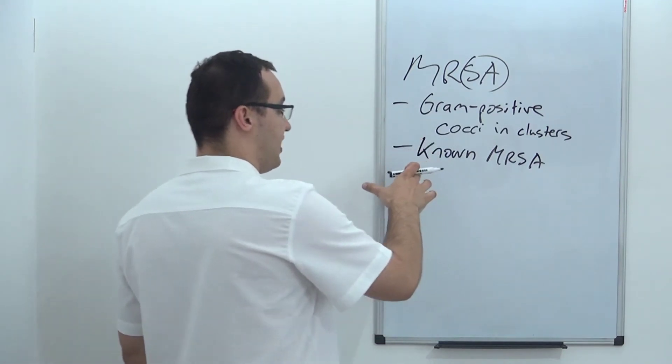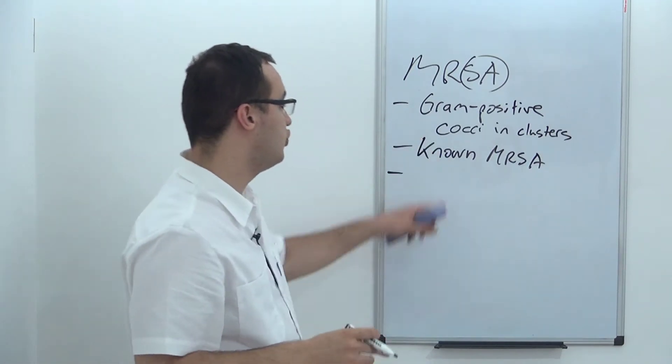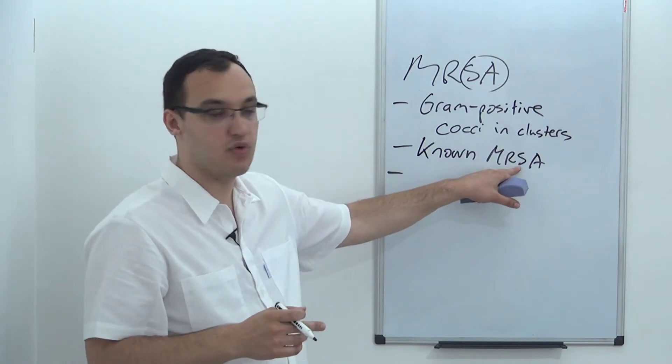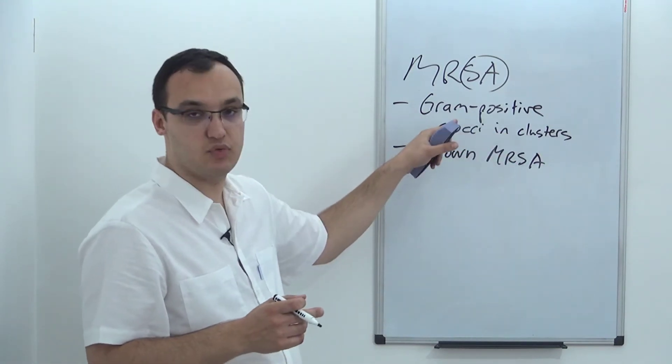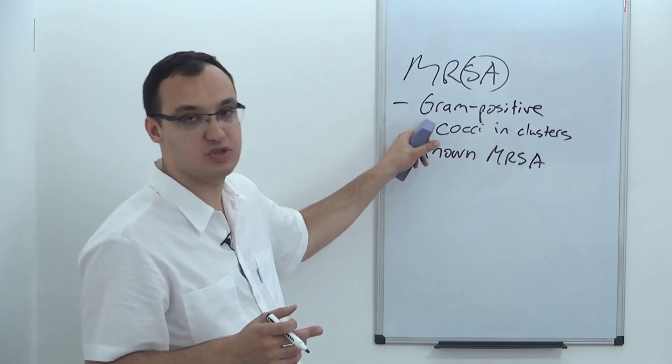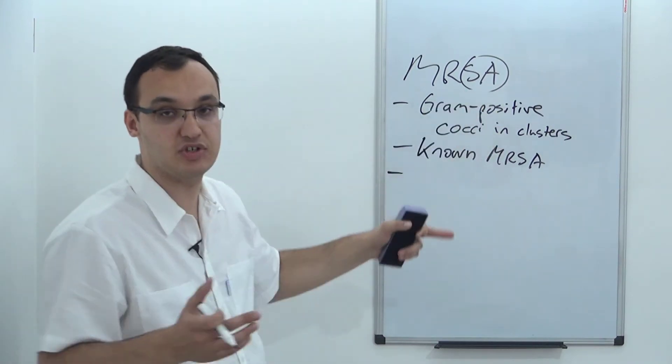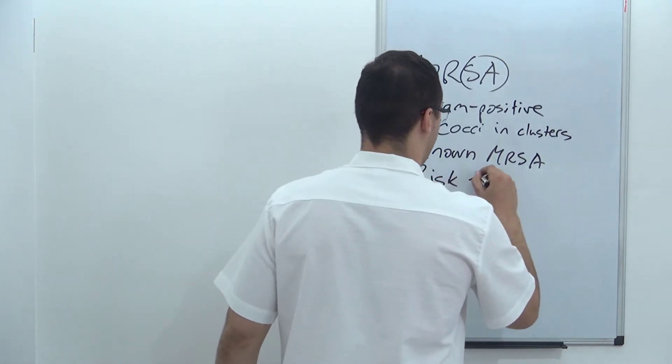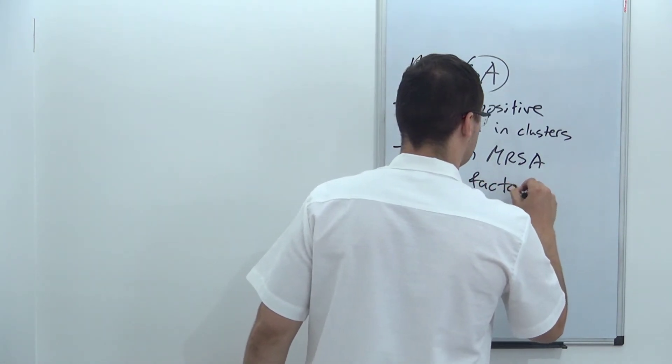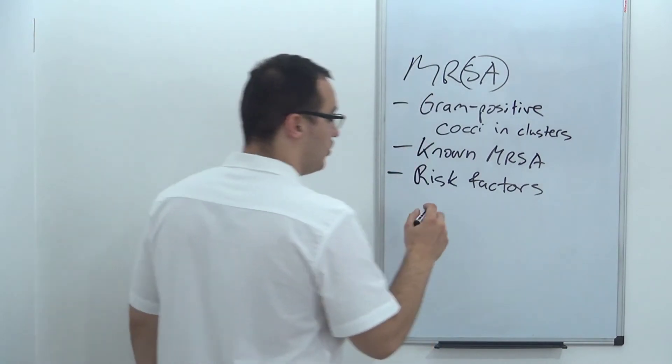The third group of patients are those who did not have MRSA before, did not have any gram positive results yet, or did not have any sputum results yet. So we don't know if the patient has MRSA, but they have risk factors. Risk factors for MRSA. And which are the risk factors?